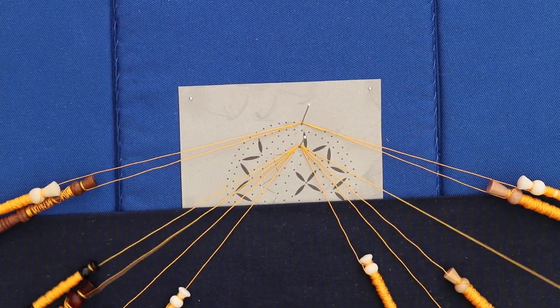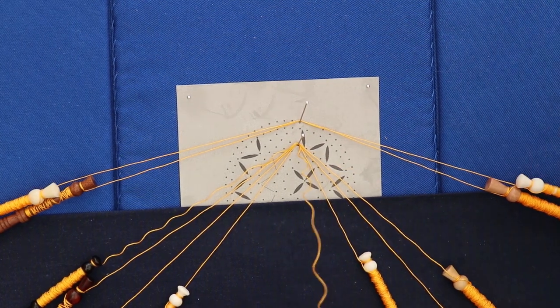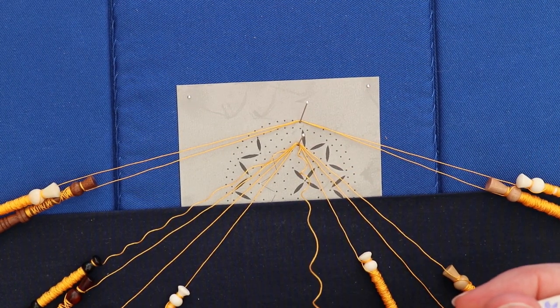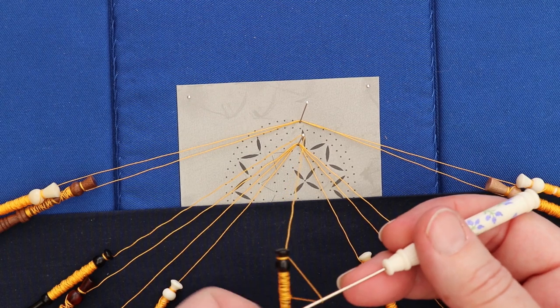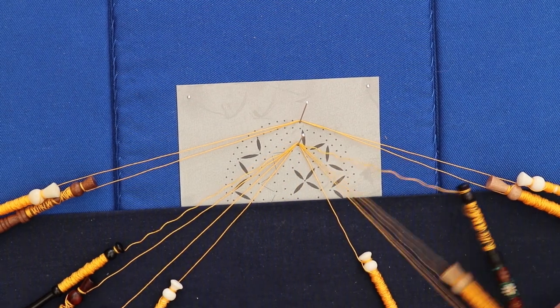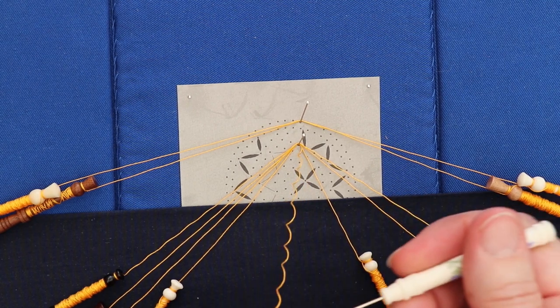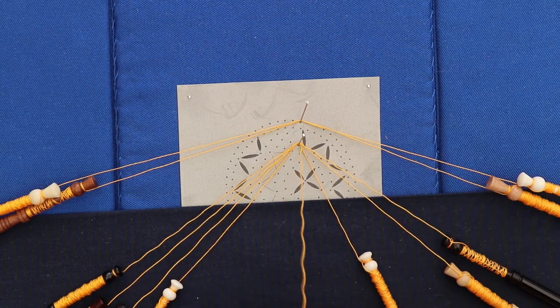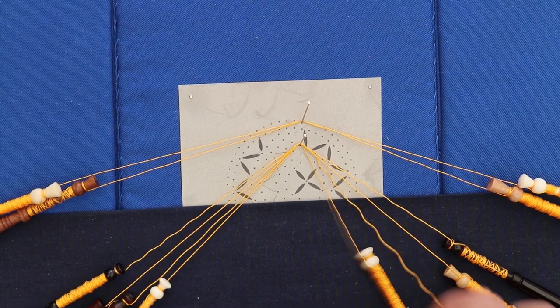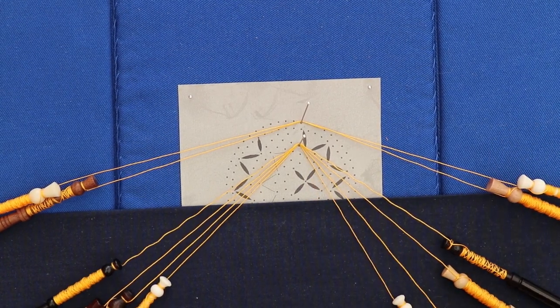It just takes a minute just to get them on and they're all over the place with the length of the threads, so we shorten those up and get them to a similar length. It's ideal to keep your pillow really tidy by keeping the bobbins at a similar length because it does make it easier to work with.